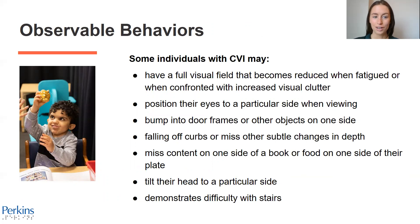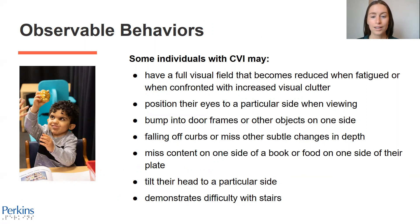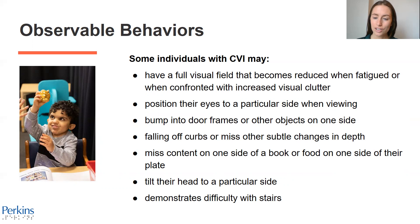Here we have an image of a student holding a gold ornament in their right hand, holding it high in their right visual field. Some individuals with CVI may have a full visual field that becomes reduced when fatigued or when confronted with increased visual clutter. They may position their eyes to a particular side when viewing, bump into door frames or other objects on one side, fall off curbs or miss subtle changes in depth, miss content on one side of a book or food on one side of their plate, tilt their head to a particular side, or demonstrate difficulty with stairs.